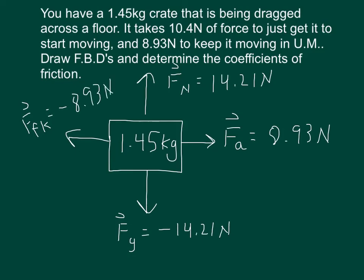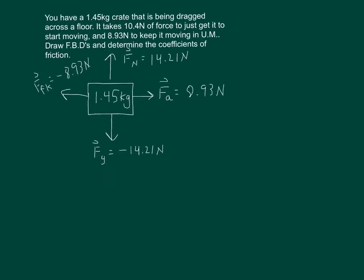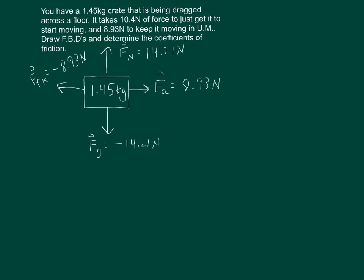So there's our free body diagram. We now want to solve for mu. Just like we did with the first example, mu is a ratio of friction divided by normal. Now we're solving for kinetic friction, so it'll be the kinetic friction force divided by the normal.